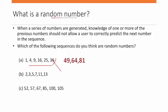Sequence (b): 2, 3, 5, 7, 11, 13. If we know the pattern, we can generate the next numbers. Yes, we can: 15, 17, 19, 23. If we know this pattern, it is not a random number.